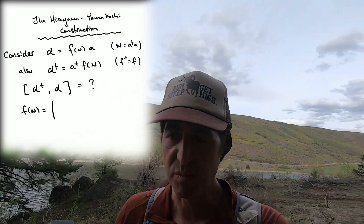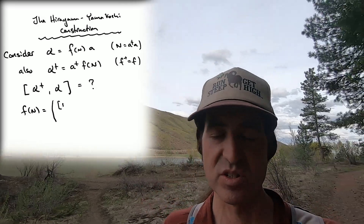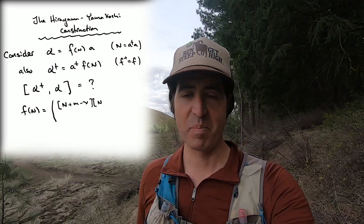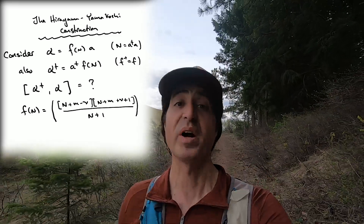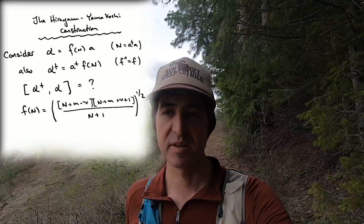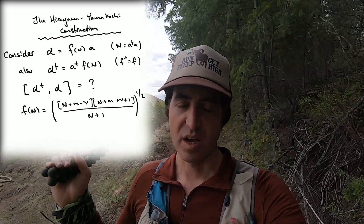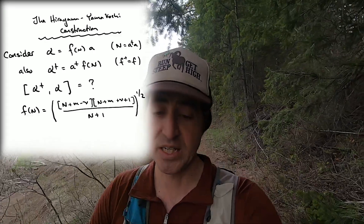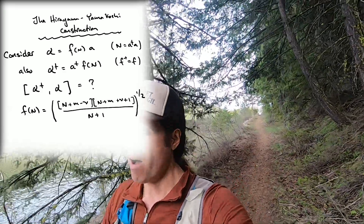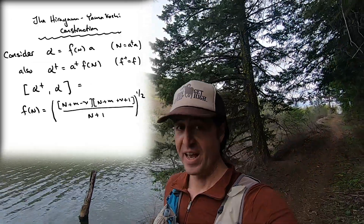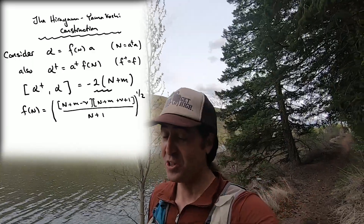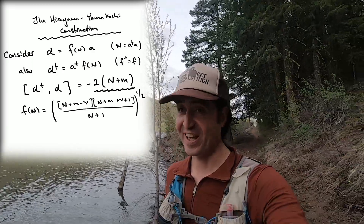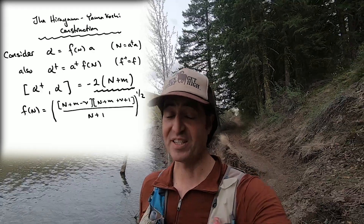They go through this whole song and dance to build this function of N and show what you can do with it, but I'll just tell it to you straight. In this case, the function of N looks kind of complicated — it's the square root of some pair of polynomial functions divided by (1+N). You compute the commutator of alpha† with alpha, and look what you get — which looks suspiciously like it should be a representation of SL2R. And indeed it is.